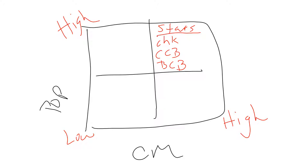I recommend going category by category rather than item by item — look at high-high all the way down, then cross those items off so you know you've already categorized them. Next, dogs are the other easiest to identify: low popularity and low contribution margin — low-low. In this case our only low-low item is crab cakes. Cross those off — they've been identified.